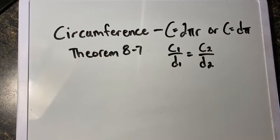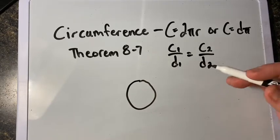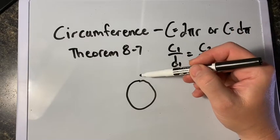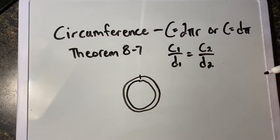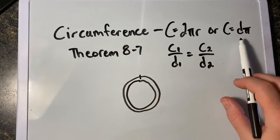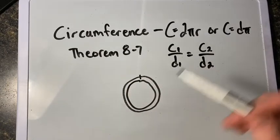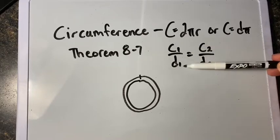The first thing we need to talk about when discussing the area and volume of circles is circumference. The definition of circumference is the limit of the perimeters of the inscribed regular polygons, and it's always a positive number. Basically, circumference is how far we would travel if we walked around a circle. The formula for circumference is 2π radius, or diameter times π. Theorem 8.7 tells us the ratio of the circumference to the diameter is the same for all circles, and that ratio is π.